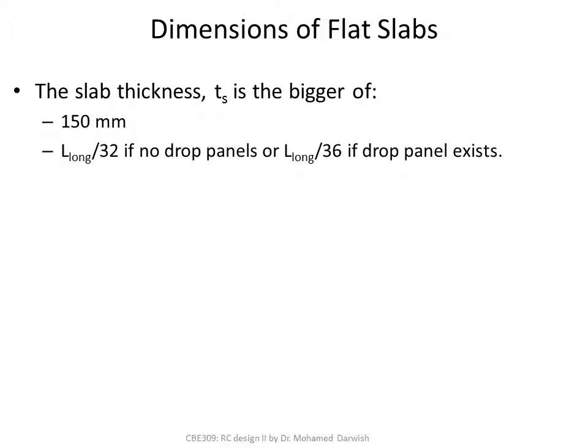The dimensions of flat slabs vary. The slab thickness TS is the larger of 150 mm and the long span divided by 32 if no drop panels exist, or the long span over 36 if a drop panel exists. We will be discussing the issue of drop panels in the second video.